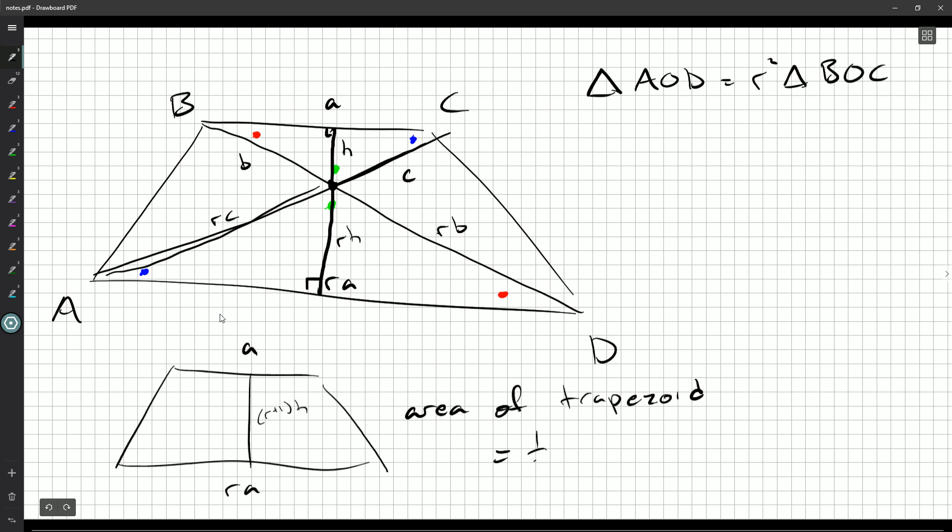So the area of the trapezoid is one-half the sum of the top and bottom times the height. And so we can get one-half AH and we can take out two factors of R plus 1 squared. Now how does that help us? Well, in terms of RA and RH, we've got a base and a height for this triangle. And we've also got an H and a base A here. So AOD is R squared times one-half AH. The area of the whole thing is one-half AH times R plus 1 squared. And of course, BOC just has an area of one-half AH.